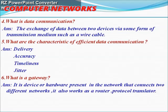Next question: what are the characteristics of efficient data communication? The characteristics for efficient data communication include delivery, accuracy, timeliness, and jitter. Next question: what is a gateway? A gateway is a device or hardware present in the network that connects two different networks. It also works as a router and as a protocol translator.